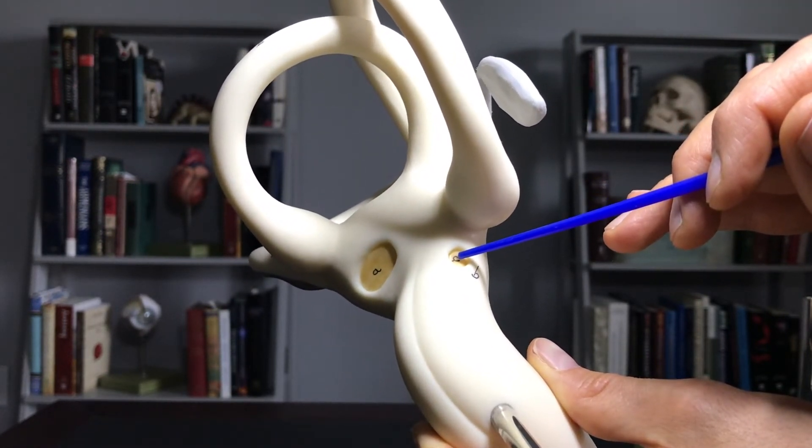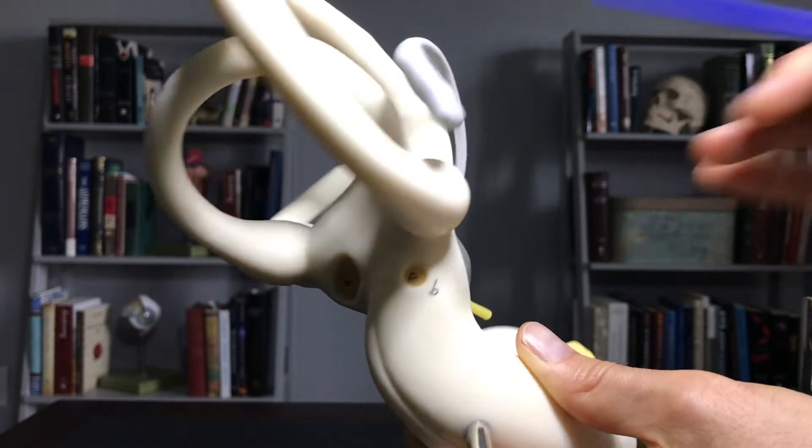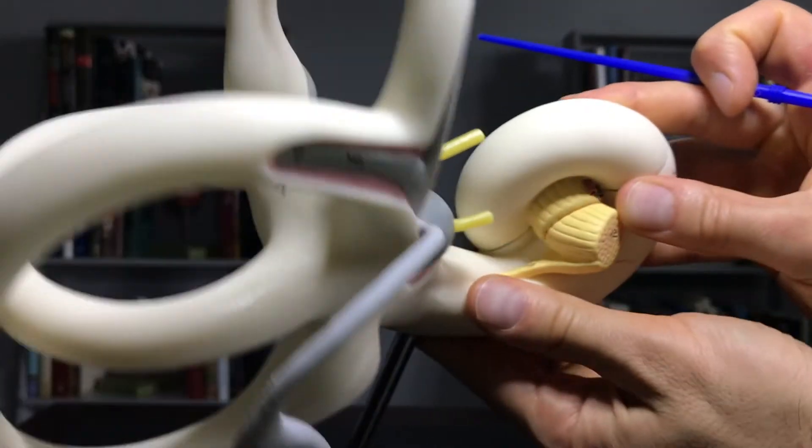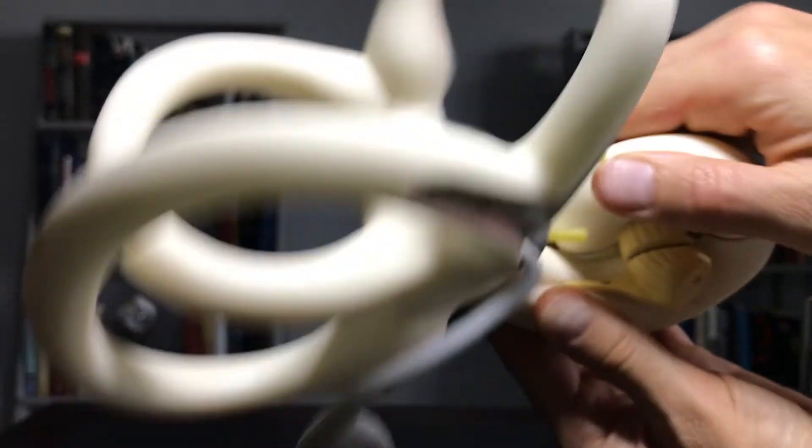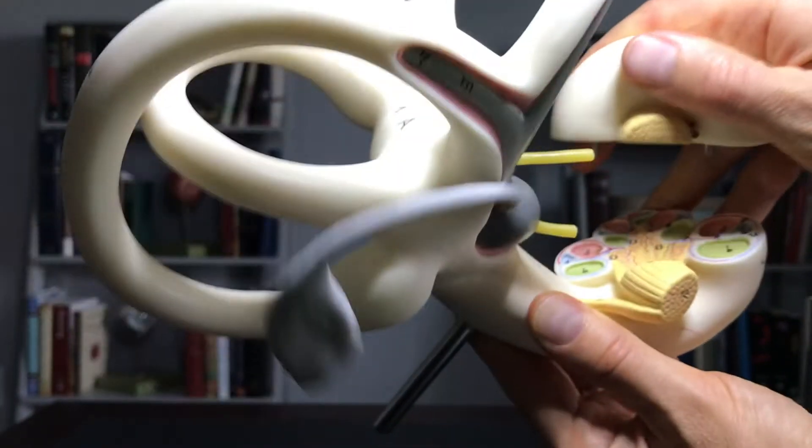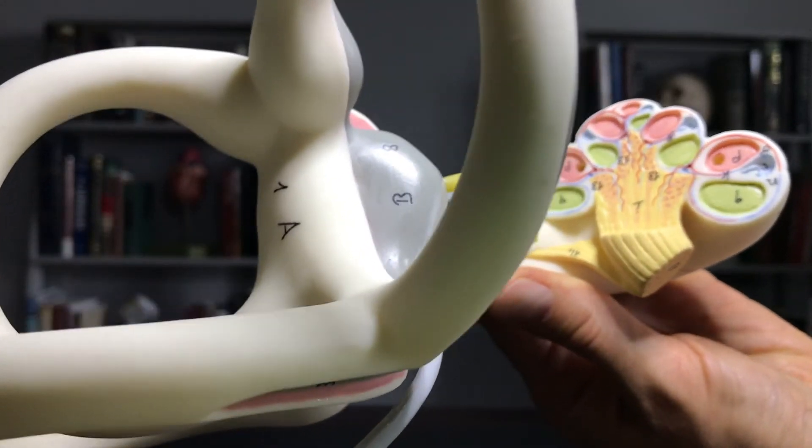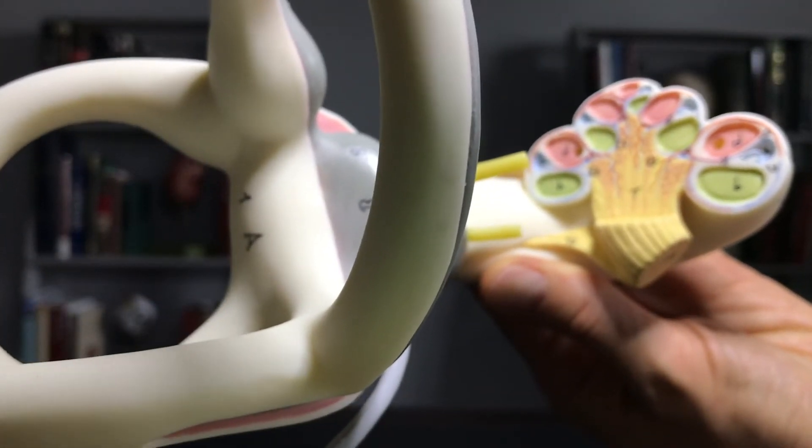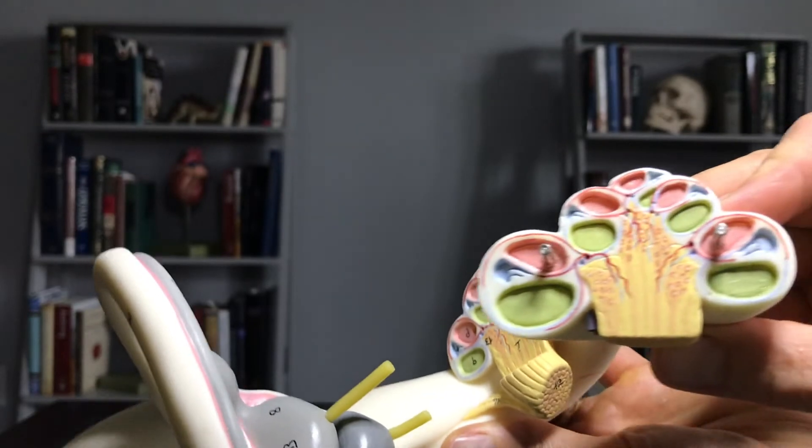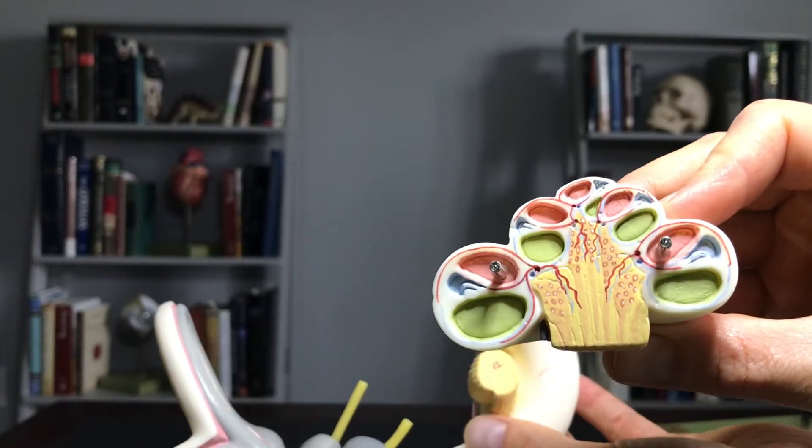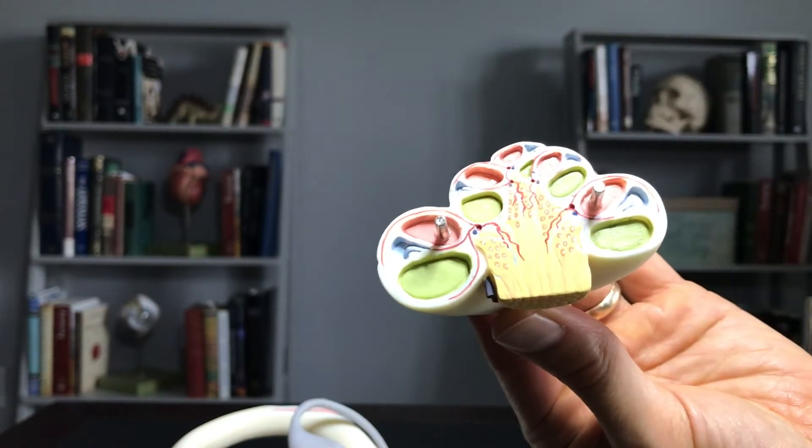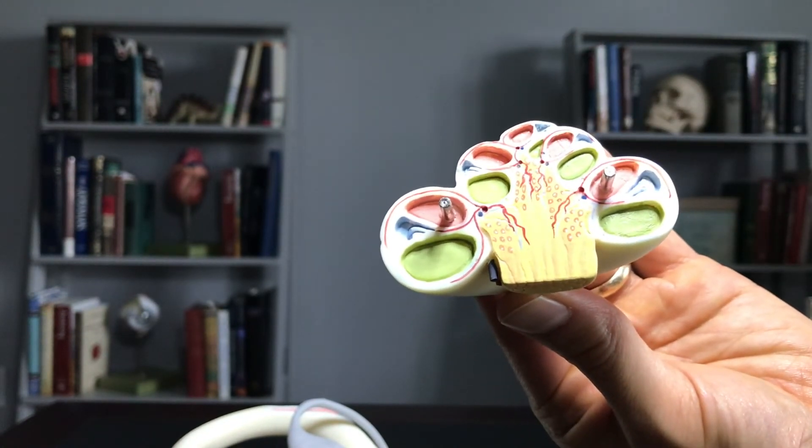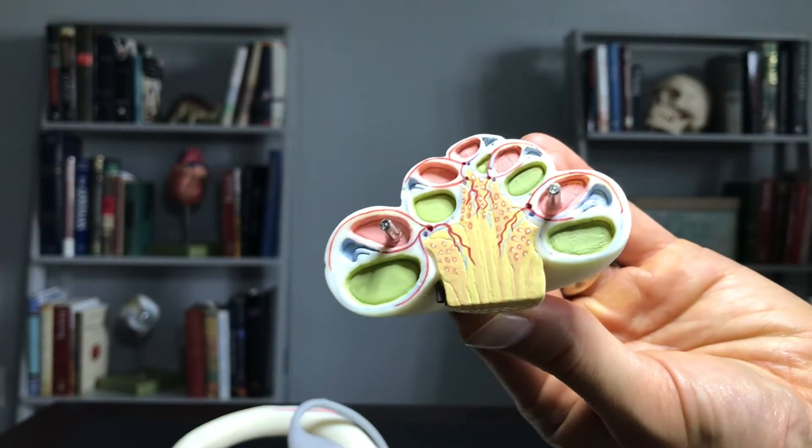Again, this is involved in the process of hearing. In fact, if we take this off right here, what you can see—this one's probably a little bit easier—is a cross-section of the cochlea.